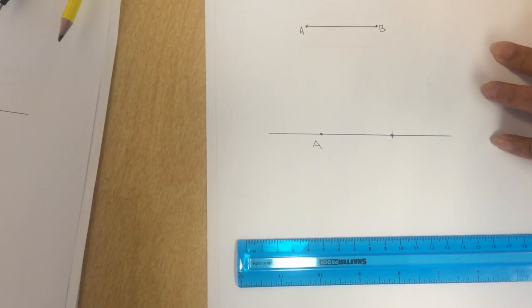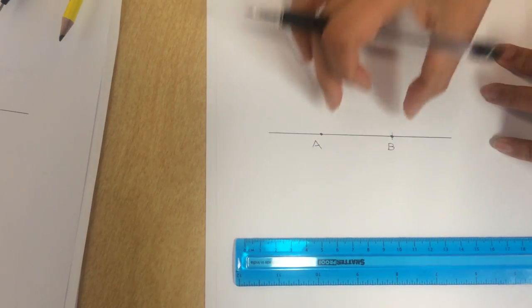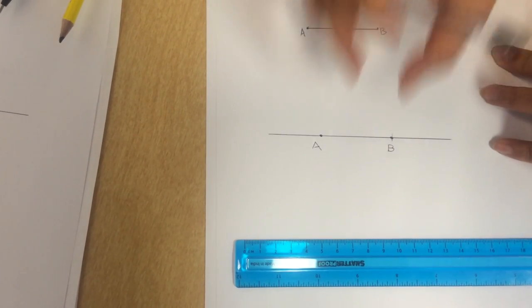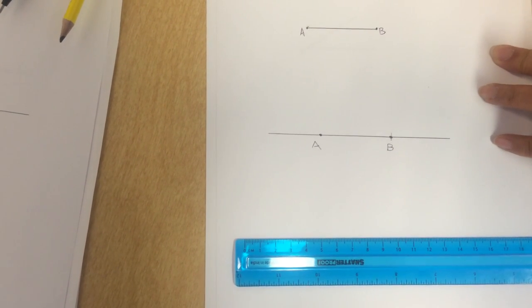Okay, so that intersection is our point B. So this is how we copy a line segment AB by using only a straightedge and compass.